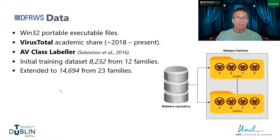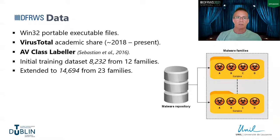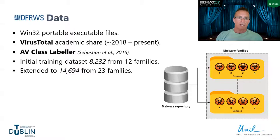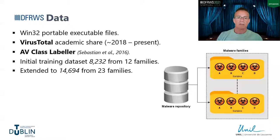The data used was primarily Win32 portable executable (PE) files — the most common format for malware. These were extracted from several VirusTotal repositories from around 2018 to 2021. I used an open source tool called AV class labeler to cluster malware by family class, using outputs from VirusTotal AV scanners to label malware according to their family. Initially I used a training set of around 8,000 samples from 12 families, later extended to around 14,500 samples from 23 families for further generalization testing.